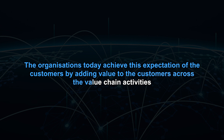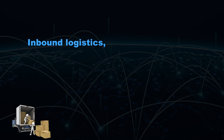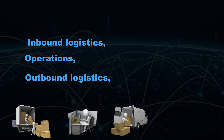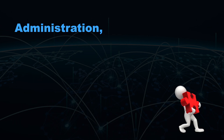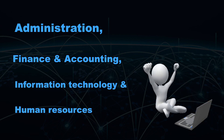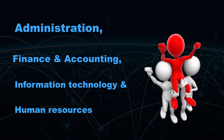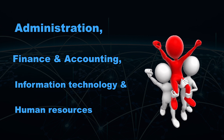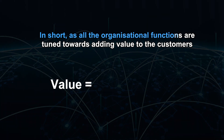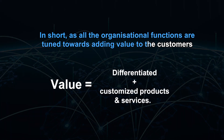Organizations today meet this expectation of customers by adding value across the value chain activities of inbound logistics, operations, outbound logistics, marketing and after-sales service. The supporting activities — namely administration, finance, accounting, information technology and human resources — are also tuned towards achieving competitive advantage. In short, as all organizational functions are tuned towards adding value to the customers, the value system of demand chain and supply chain are also designed to meet the needs of customer segments with differentiated and customized products and services.